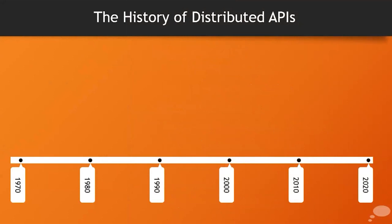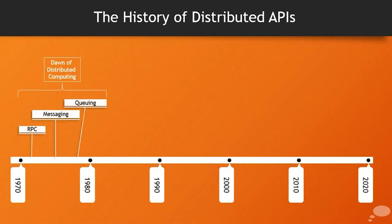Distributed APIs and the way we think about them — using REST, which is probably the most common these days — have a really long history. When I started putting this together I realized that back in the 70s, which is probably before most of you were born, we already had the beginnings of this idea of distributed APIs: computers needing to talk to other computers. The first ideas that came out of that were RPC, which stands for remote procedure call, and then messaging and queuing.